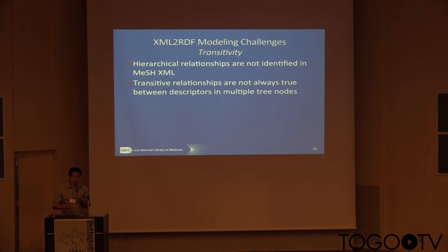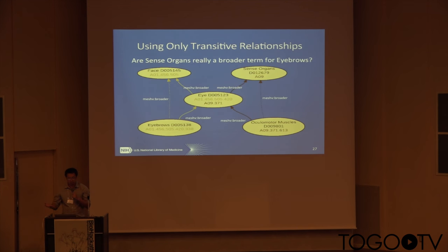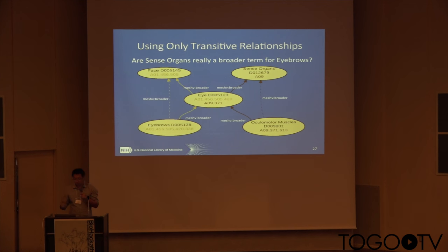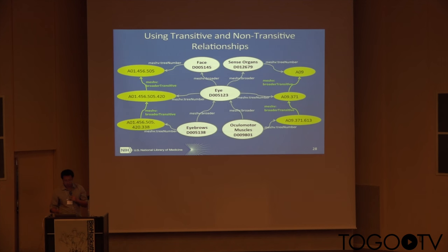MeSH has a multiple-tree hierarchical structure, and whether those structural predicates should be transitive needs to be carefully studied. MeSH has multiple trees that can overlap. If you allow transitivity, a descriptor in the middle of two trees could incorrectly become a child of a node in the other tree — which is not true. So we do not allow transitivity at the descriptor level, but we do allow transitivity at the tree node level.